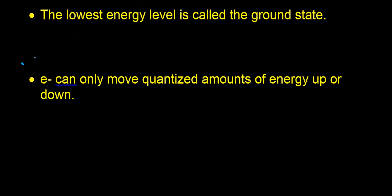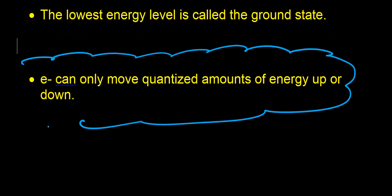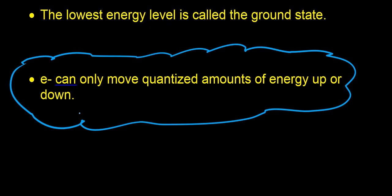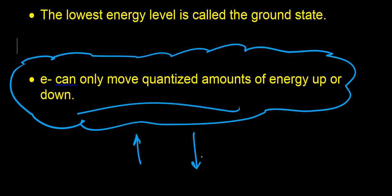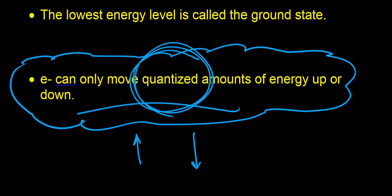Electrons can only move quantized amounts of energy up or down. If they take in energy, they can go from a low energy state to a higher energy state, or if there's room, they can go from a high energy state down to a low energy state. But the jump in energy is a very specific quantity — it's an exact amount of energy, which is why it's known as a quantized amount of energy.